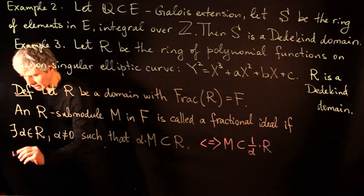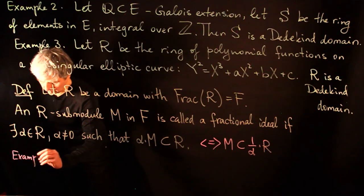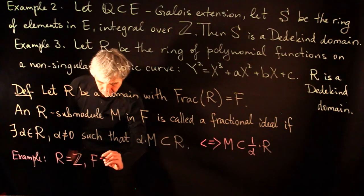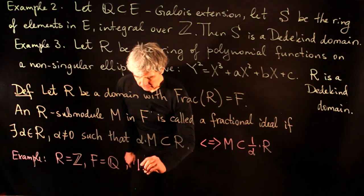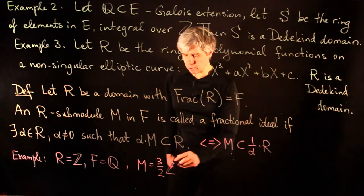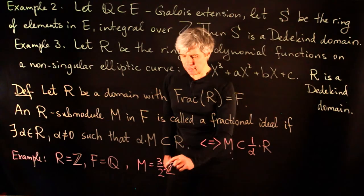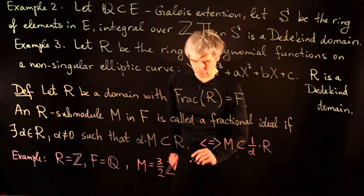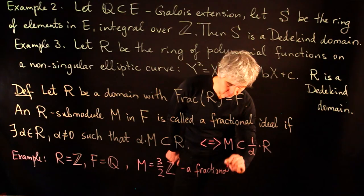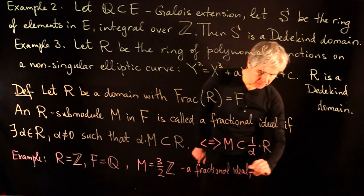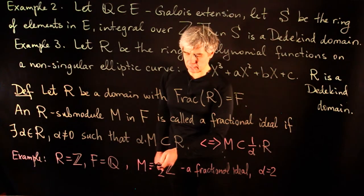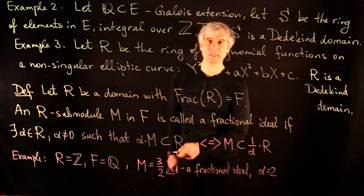Let us give an example of a fractional ideal. If R is Z and F is Q, take M to be (3/2)Z — these are fractions with numerators divisible by 3 and denominator equal to 2. This is a fractional ideal. If we take α = 2, then multiplying this Z-submodule by 2 gives a result inside the integers.